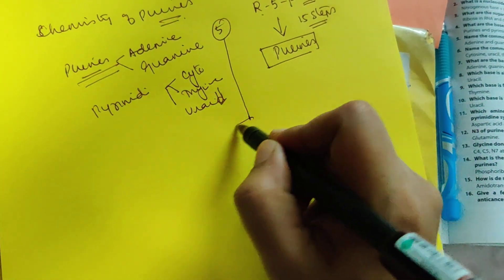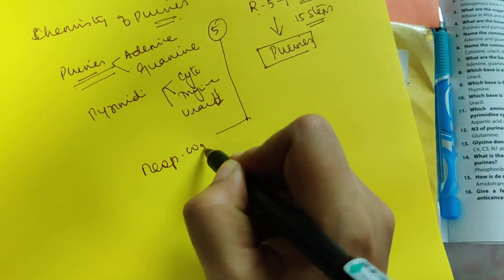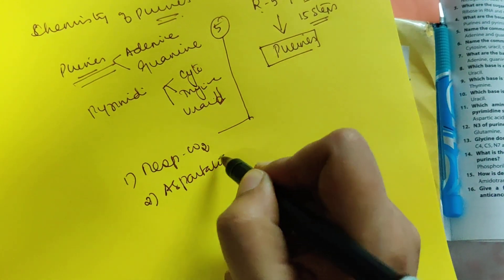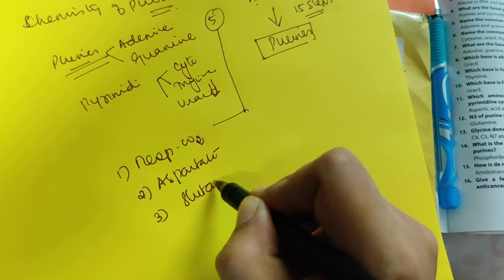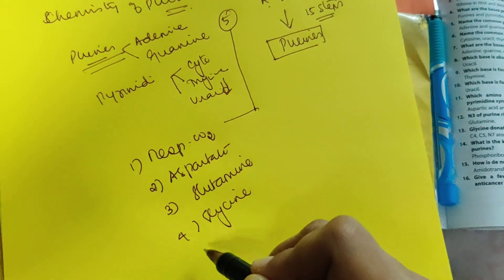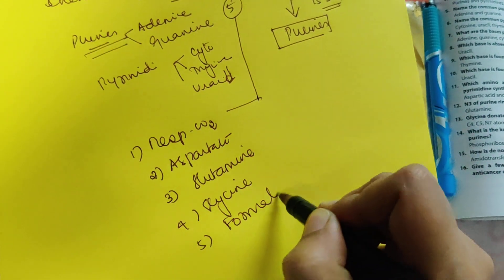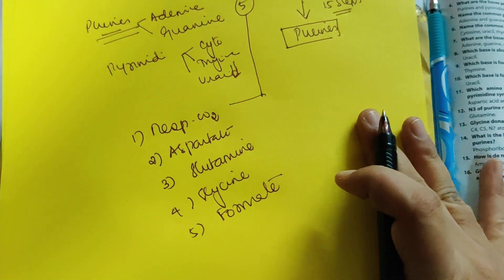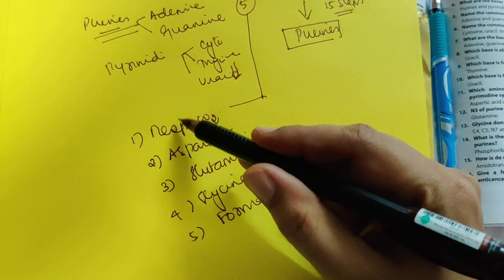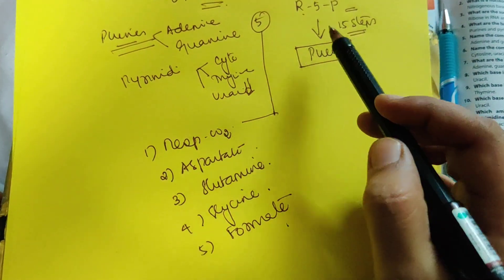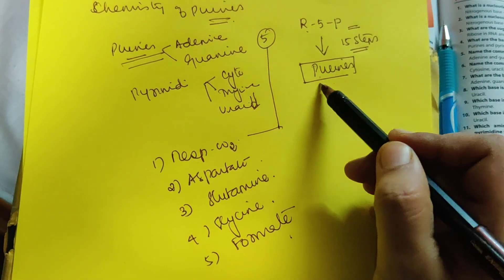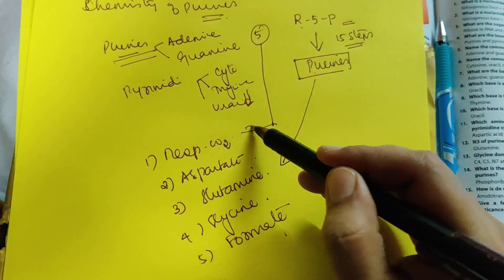In these 15 steps, 5 ingredients are added to the process. The first is respiratory carbon dioxide, the second is aspartate, the third is glutamine, the fourth is glycine, and the fifth is formate. All 5 are added across the 15 steps, and ribose 5-phosphate is converted to purines.